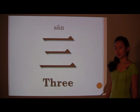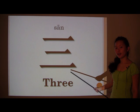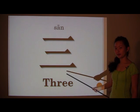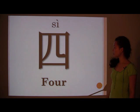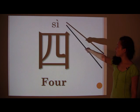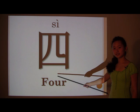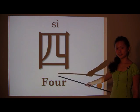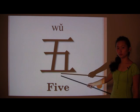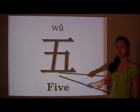Now you have 3, or 三 (SĀN). 3 is 三. Then 4, 四 (SÌ) — fourth accent, so make it sharp. 四. And 5 is 五 (WǓ) — third accent, make it dip and then come back up. 五.